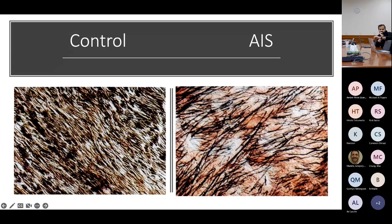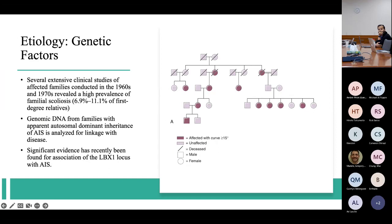On the left you can see the nicely organized fibers of the ligamentum flavum with higher density, and on the right you can see the disorganization in patients with AIS. There are also a multitude of genetic factors being evaluated. We know AIS has a genetic predisposition; studies from the 1960s and 1970s revealed high prevalence of familial scoliosis with autosomal dominant inheritance. Recent research has focused on the LBX1 locus and its potential contribution to AIS.